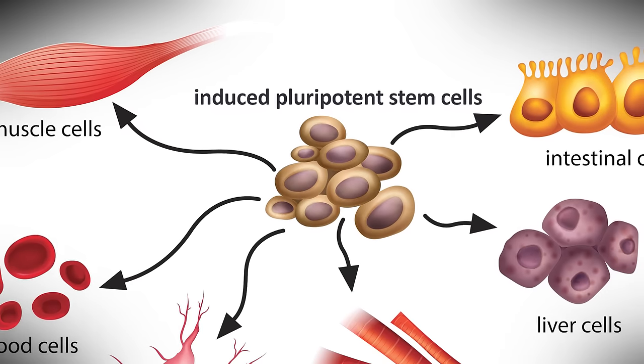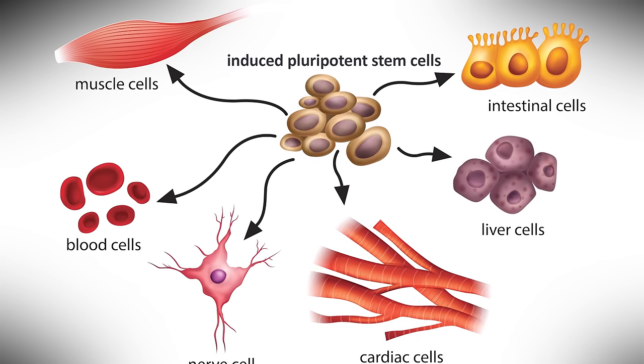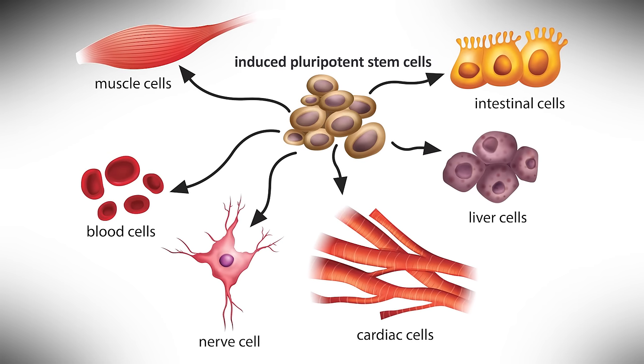The resulting cells, induced pluripotent stem cells, can be obtained from skin cells or blood cells and have the potential to become any cell in the human body.